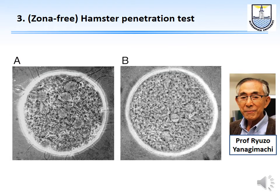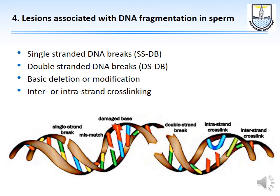The hamster penetration test assesses sperm ability to penetrate the oocyte membrane. Zona-free hamster eggs are used. Introduced by Professor Ryuzo Yanagimachi at Kapiolani Medical Center in Honolulu, the test has not stood the test of time: sometimes sperm fails the hamster test but successfully fertilizes the wife's oocyte in actual IVF, so it is no longer considered of value.